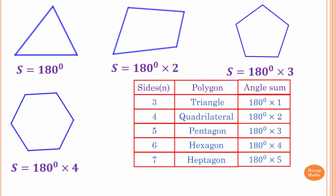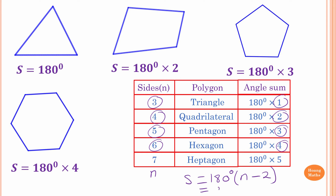Now you should see the pattern. What happens if it's n sides? For n sides, the angle sum S equals 180 degrees times... you can see: for 3 sides we multiply by 1, for 4 sides by 2, for 5 by 3, for 6 by 4. Following this pattern, the sum of angles of a polygon is 180 times (number of sides minus 2), or written as S = (n − 2) × 180 degrees.